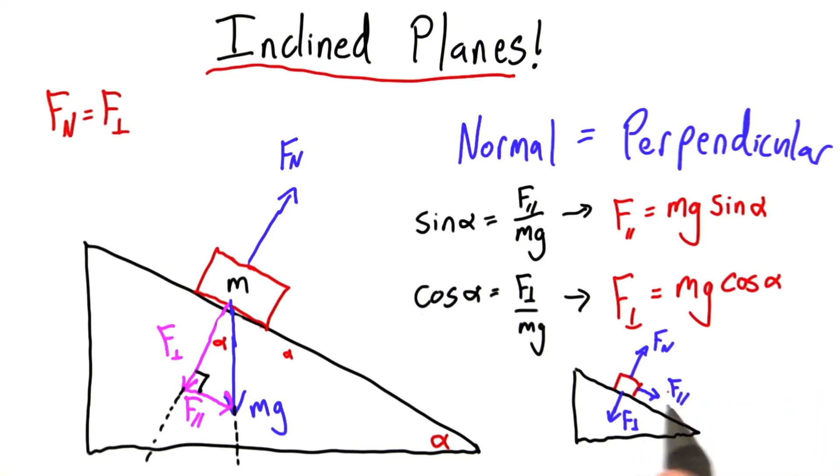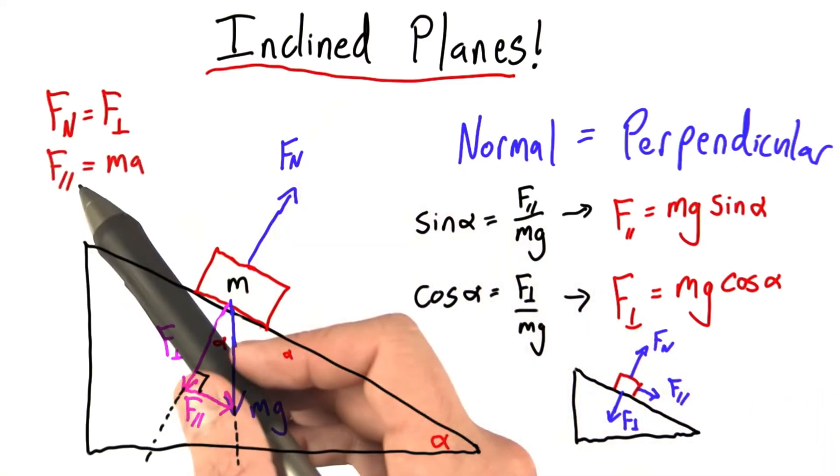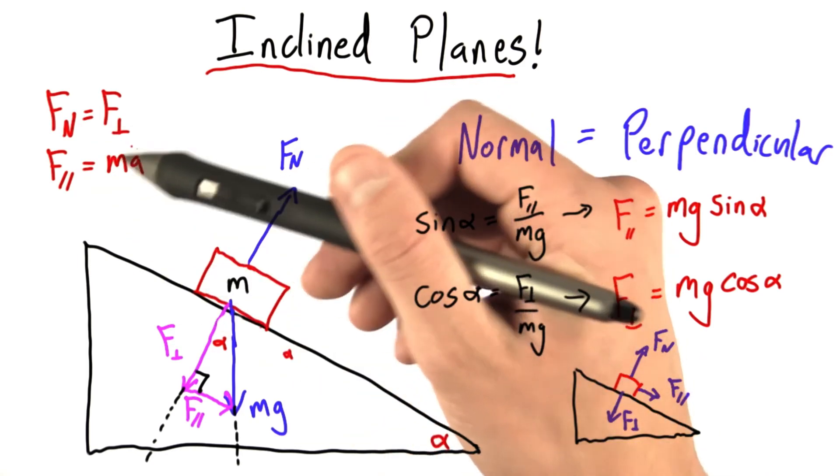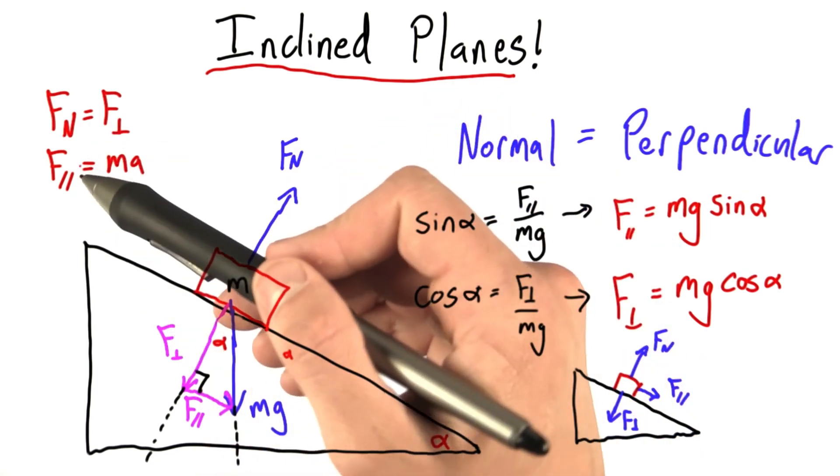Fn must equal f perpendicular. In fact, the only unbalanced force here is this parallel force. And this parallel force, since it's unbalanced, is what's causing the acceleration. It must be equal to ma.